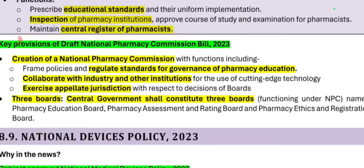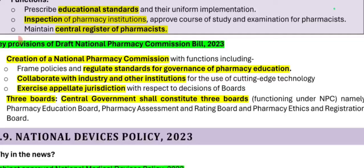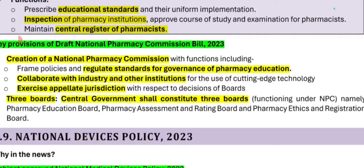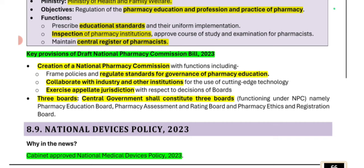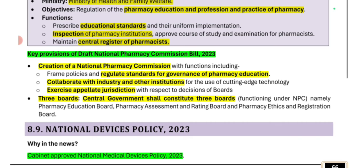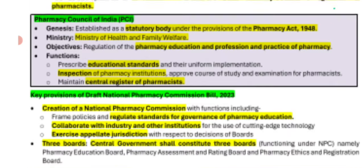Key changes under the National Pharmacy Commission include: collaboration with industry and institutions on cutting-edge technologies such as artificial intelligence. The Central Government will establish three boards: the Pharmacy Education Board, the Pharmacy Assessment and Rating Board, and the Pharmacy Ethics and Registration Board.